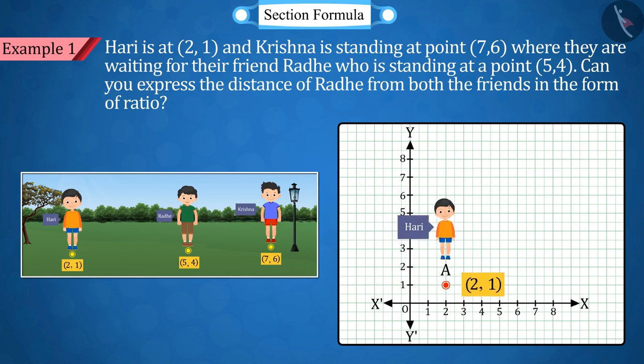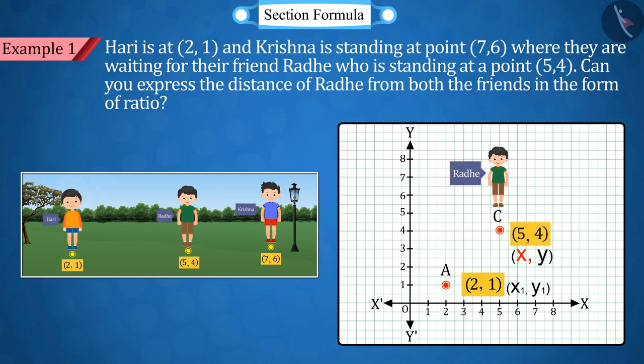Assuming point A, that is x₁=2, y₁=1 as Hari's position, point C where x=5, y=4 as Radhe's position, and point B where x₂=7, y₂=6 as Krishna's position. By joining these three points together, we get a line segment.